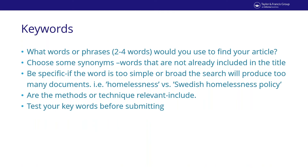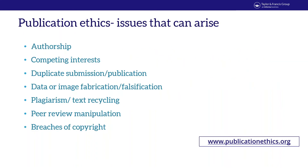Along with the title and abstract, authors are often asked to provide keywords included with the article metadata — these act as flags in searches to help readers find your work. Use synonyms, as people might use slightly different words. Think about using words different from those in your title and abstract. Be specific to narrow search results — for example, 'Swedish homelessness policy' versus just 'homelessness' will give quite different results. Test your keywords in Google Scholar to see if results match your expectations.